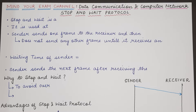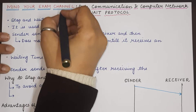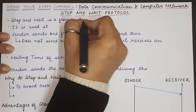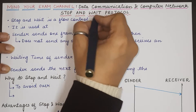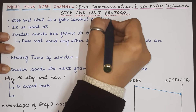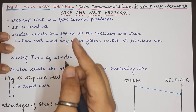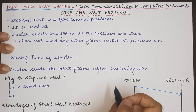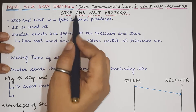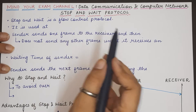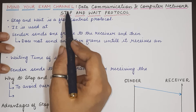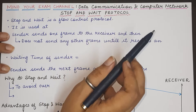The stop and wait protocol is a flow control protocol. As we have already seen, flow control means controlling the speed of transmission. How fast the sender is sending data depends upon how fast the receiver can receive the data. Controlling the flow of information is governed by the flow control protocol, and today we are studying the first flow control protocol, which is the stop and wait protocol.